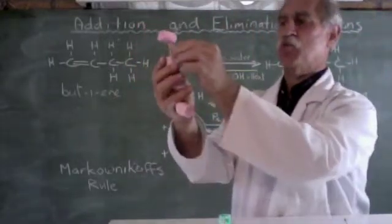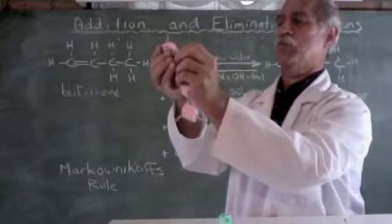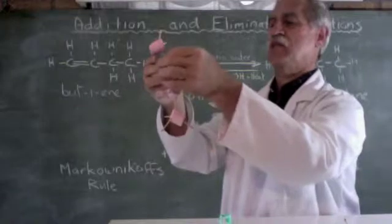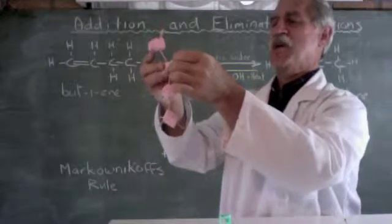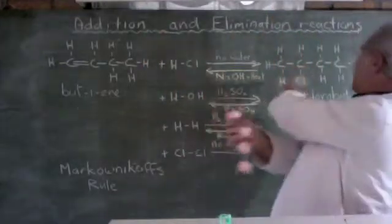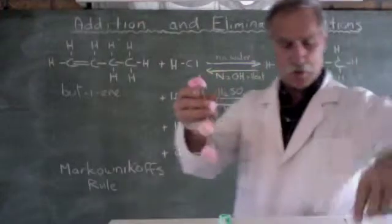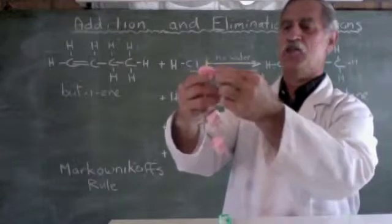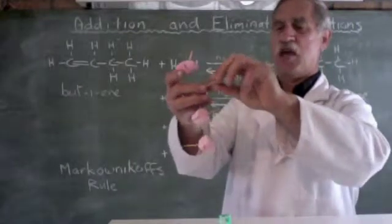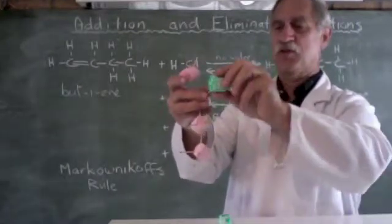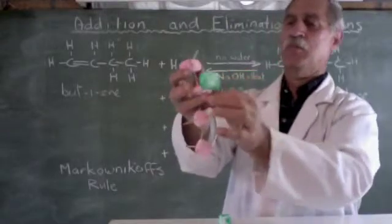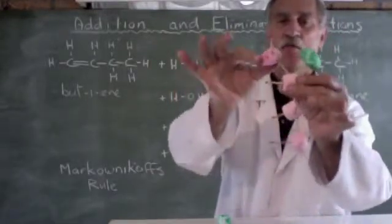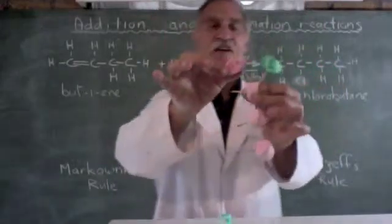Now notice what we're going to do. Let's do it here. We're going to break this bond. Like that. We're going to add the H to the end. So we take off the H, add it to the end, and we're going to add the chlorine to the second carbon.